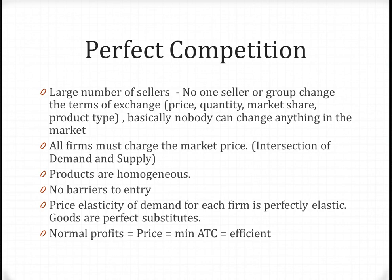Perfect competition is a type of market structure where there are a ton of sellers who sell identical products at the same price. In this market, there are so many sellers that no one seller or group of sellers can change the market price or terms of exchange. They are what's called price takers. They have to sell at the equilibrium price, or the intersection of demand and supply. They all sell the same identical product, so all of their products are perfect substitutes for each other. There are no barriers to entry for a perfect competition market.